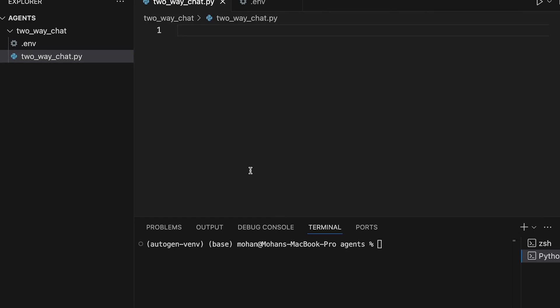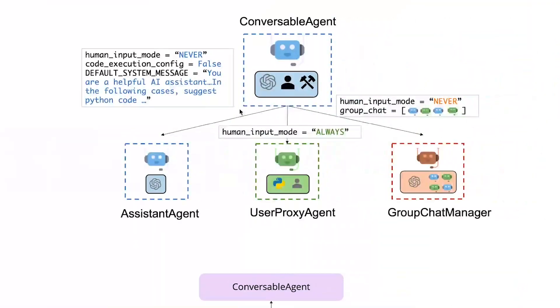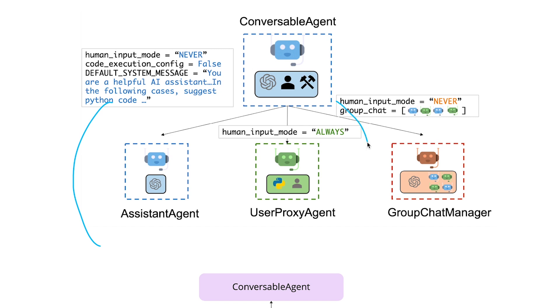In this video we are practically going to understand how we can create a multi-agent system using the autogen framework. We are going to leverage the different built-in classes that autogen offers, a few of which are the user proxy agent and the assistant agent that we already have dealt with. We'll also talk about the group chat manager in one of our upcoming sessions, but in this particular session we are going to leverage both assistant agent as well as user proxy agent.